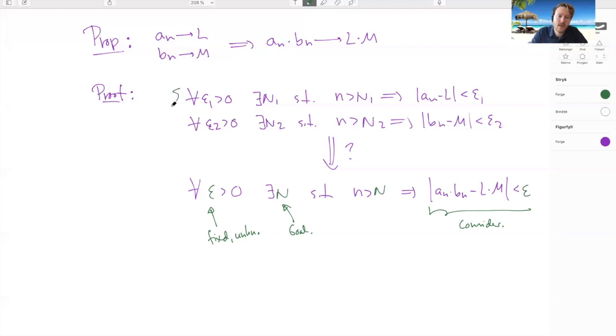Your tool is basically that you know this. So if you get an minus l alone or bn minus m alone, you can bound it by whatever constant you want, because for every epsilon, this inequality is true. Now, the thing is, you need to relate this expression here to these things.